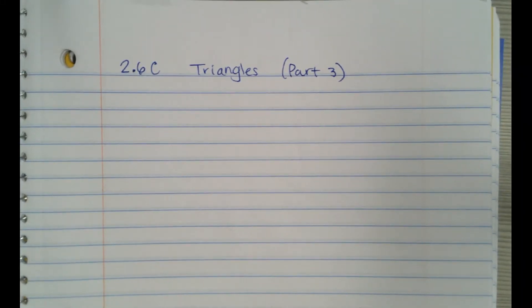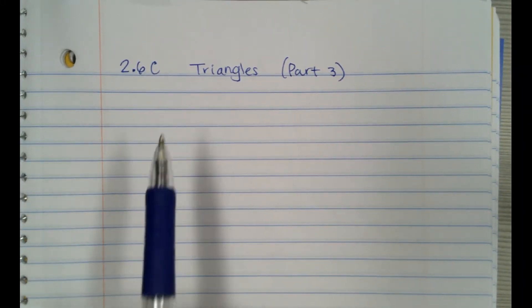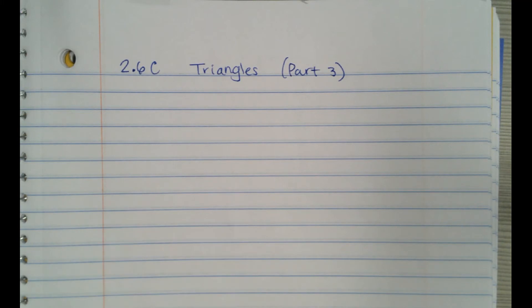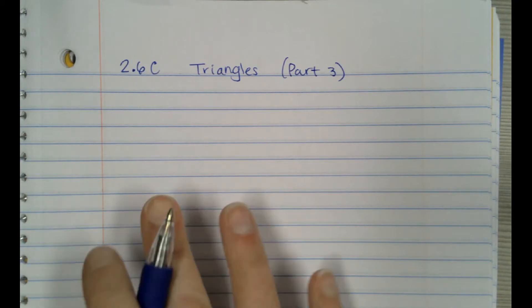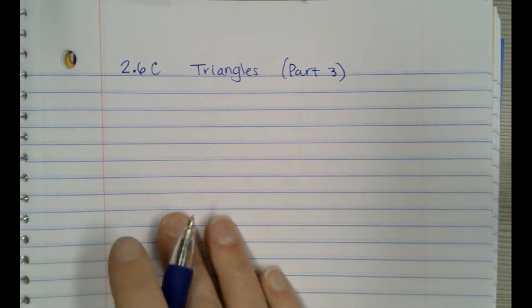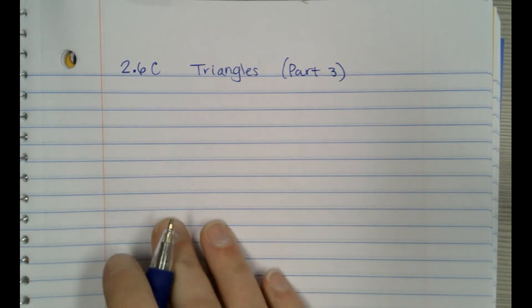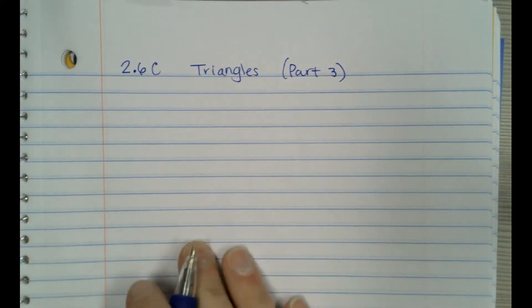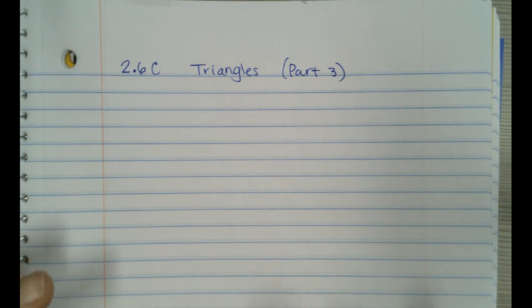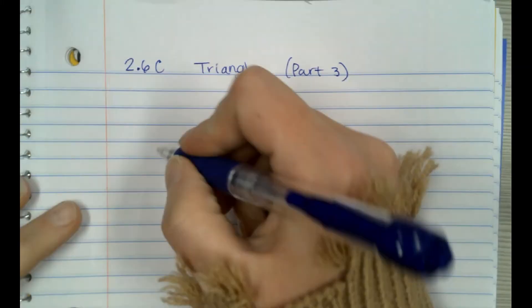All right, so for today's last section about triangles, this is part three. This is actually a pretty easy lesson, but I've had some kids struggling with it so far, and I think it's because they don't know how to name sides and angles. So real quickly, I'm going to look at that.